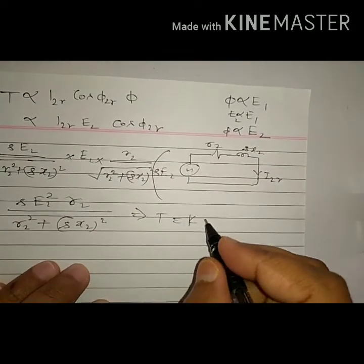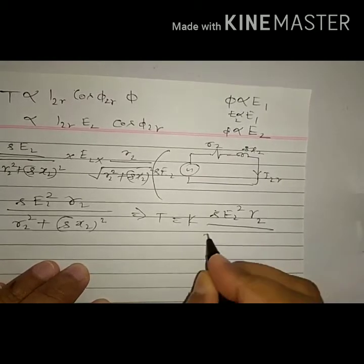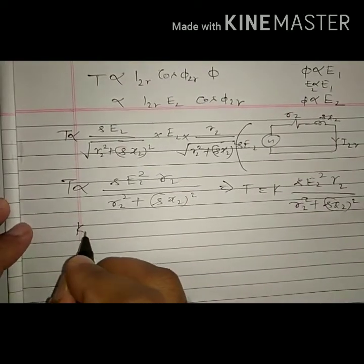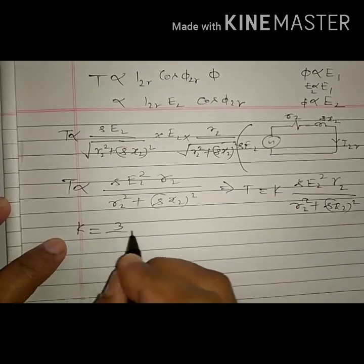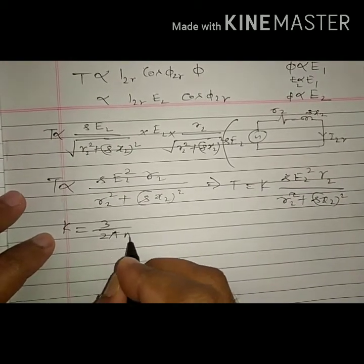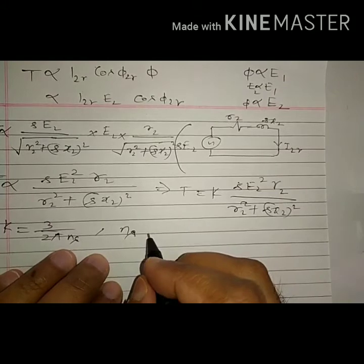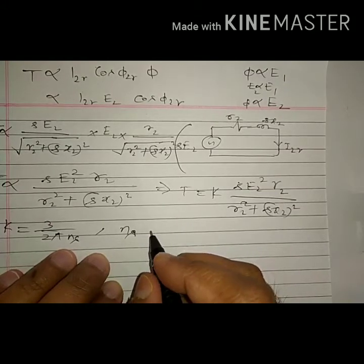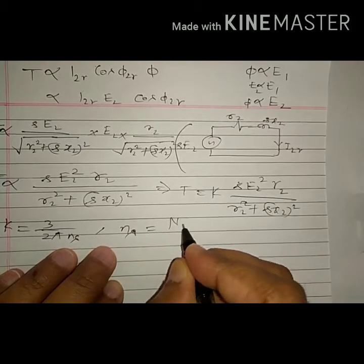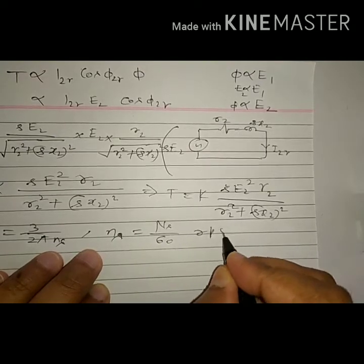Torque can be written as T = K * s * e2² * r2 / (r2² + (s*x2)²), where K is the constant of proportionality given by 3 / (2*pi*ns), and ns is the synchronous speed of the rotating magnetic field in revolutions per second. Since ns is in RPM, ns divided by 60 gives RPS.